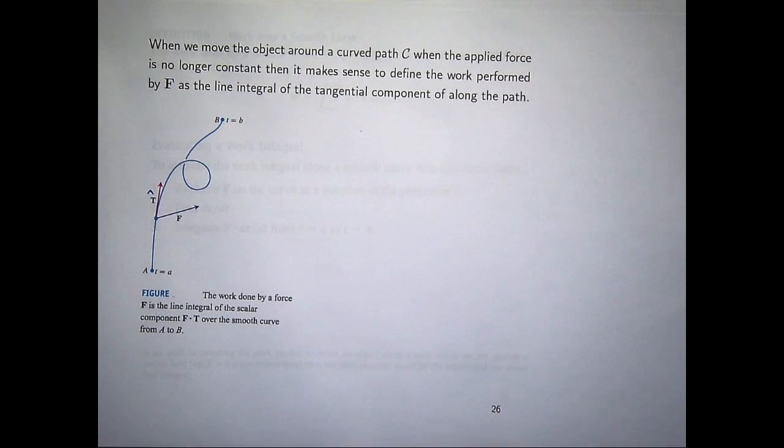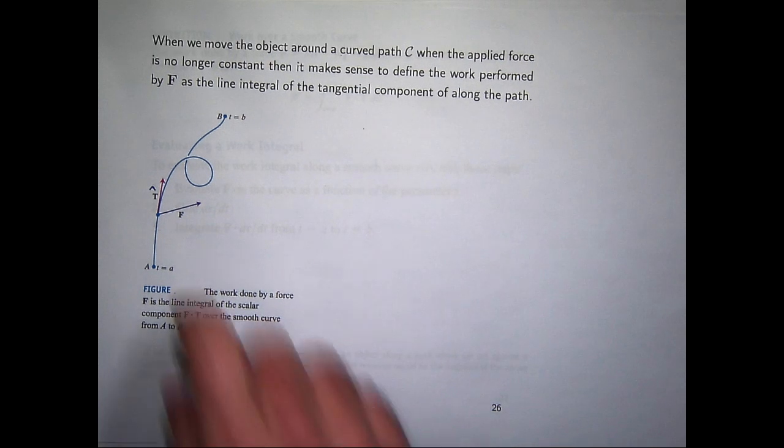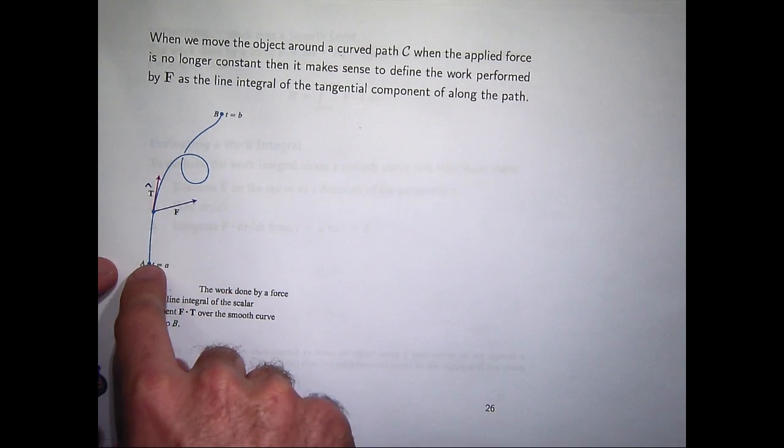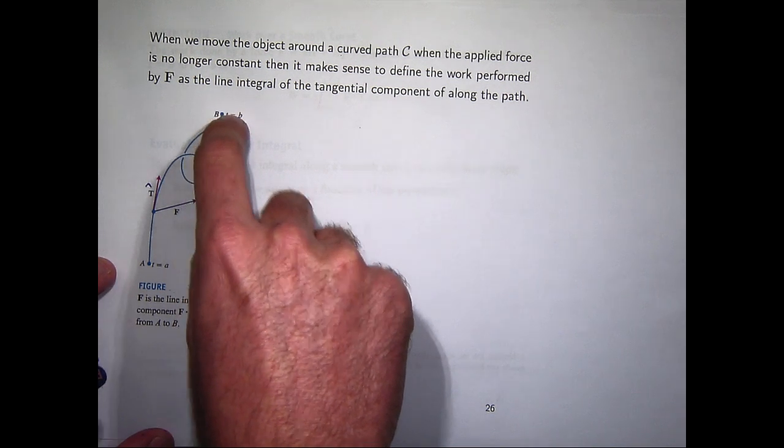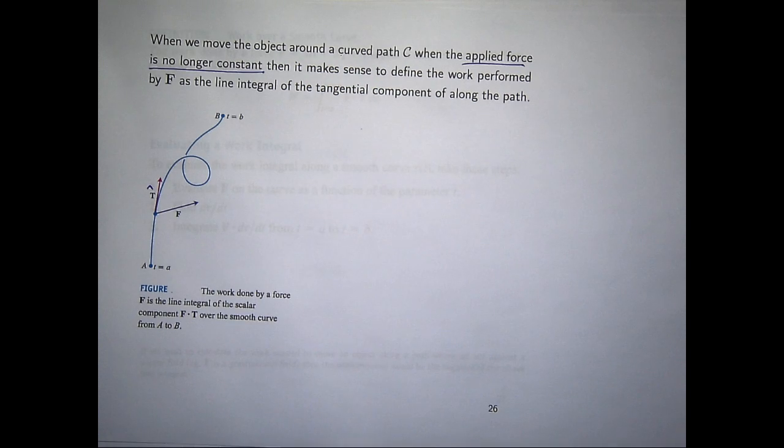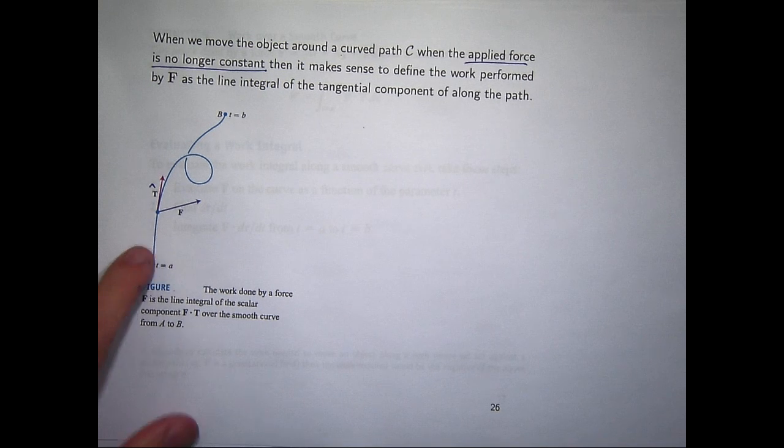In this picture you've got a curve which is smooth and some force is acting and you're moving, for example, a particle from this point along this curve to this point. So let's look at the case when the applied force F is no longer, or not necessarily constant. And we've got this curve, this smooth curve here.